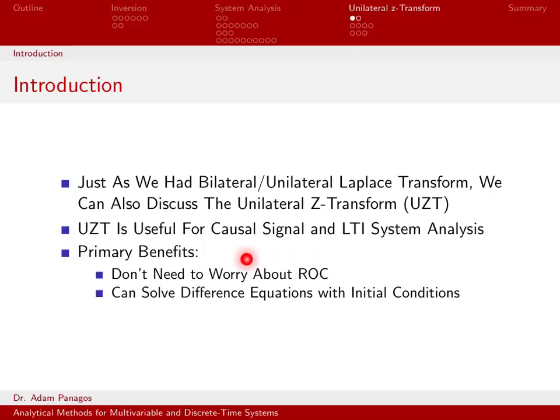The unilateral Z-transform is also very useful for solving difference equations. So just like the Laplace transform was useful for solving differential equations, we can use the unilateral Z-transform to solve difference equations that have some type of initial condition. So really the only thing that's changing here, the unilateral Z-transform is a special case of the bilateral Z-transform. And it's a special case under the condition that we're assuming that all of our signals start at some time and go to the right, they don't go to the left.